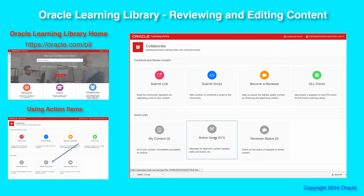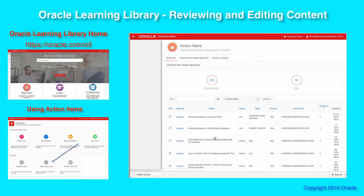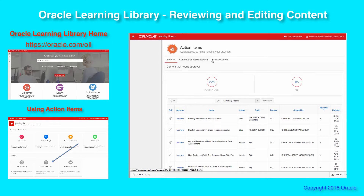Click on the Action Items button and you'll see two major tabs: Content That Needs Approval and Finalize Content. As a reviewer, you're going to take content that has been submitted but has not yet been approved for viewing and usage. You'll work on that content until you think it's really fantastic — you might ask a question of the author — and then finally you will approve it. Let's take a look at the steps involved.